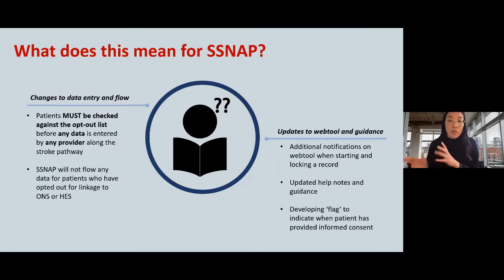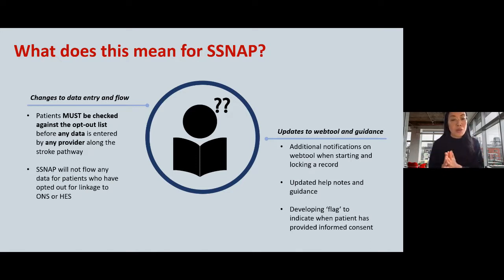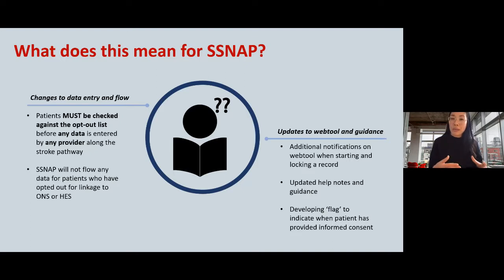To help users comply, SNAP will be adding additional notifications on the web tool when you start and when you lock a record, to remind you to check that patient against the National Opt-Out list. We're also developing a flag on the web tool that will indicate whether a patient has provided informed consent earlier in the pathway, flagging whether you need to run the patient's NHS ID through the MESH system.